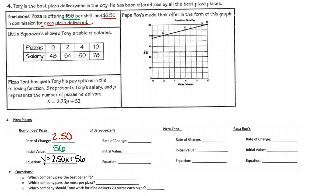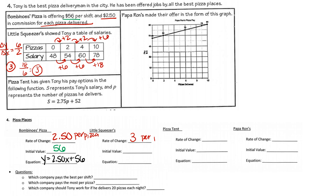For the second option, Little Squeezers, we find the rate of change from the table. The x-values change by 2, 2, then 6. The y-values go from 48 to 54 (plus 6), 54 to 60 (plus 6), 60 to 78 (plus 18). Setting up the fraction: 6 over 2 equals 3; 18 over 6 also equals 3. So he gets $3 per pizza at Little Squeezers. The initial value at x equals zero is $48 for coming to work. Equation: y equals 3x plus 48.